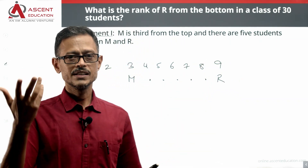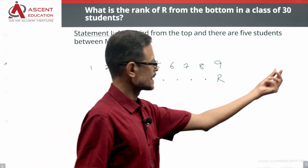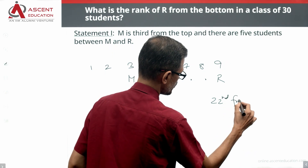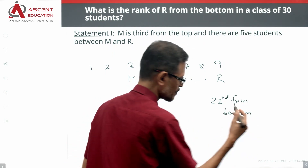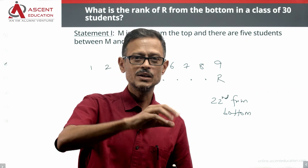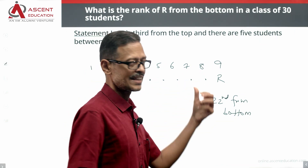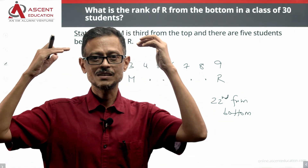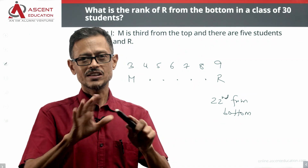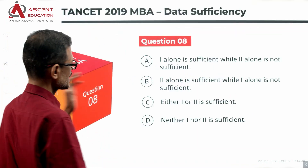So R's rank from the top is 9. Therefore R's rank from the bottom is 22 in a class of 30. This gives us a unique rank number, so statement one alone is sufficient. Answer option A remains a possible answer — it says statement one is sufficient. Answer option B is eliminated because it says statement one is not sufficient.